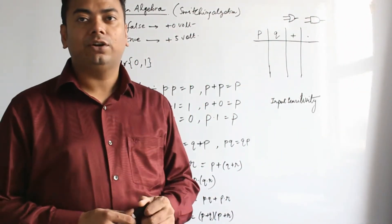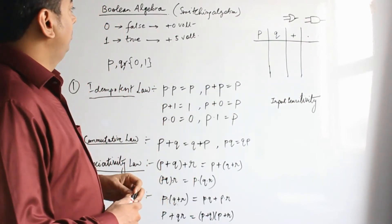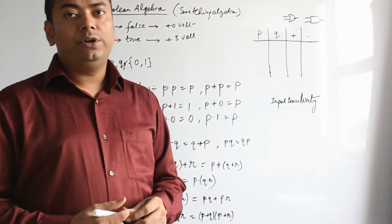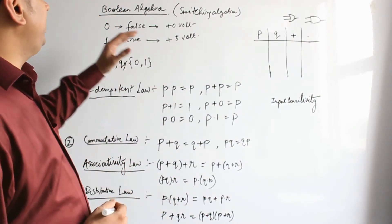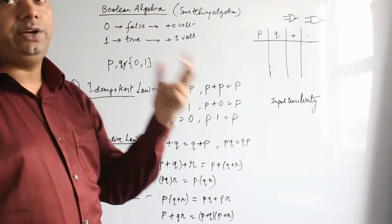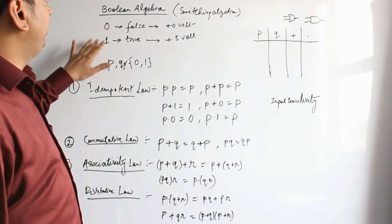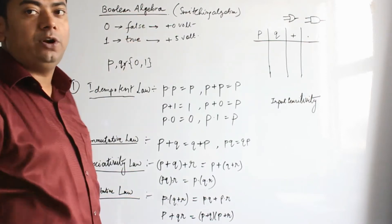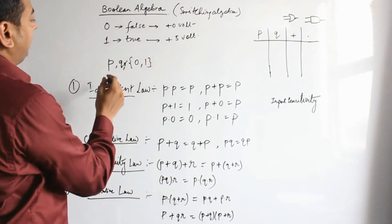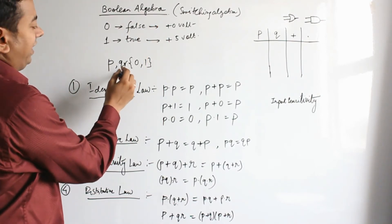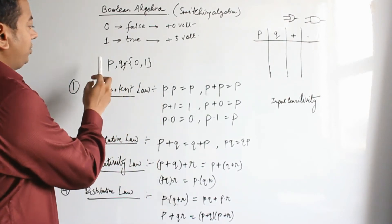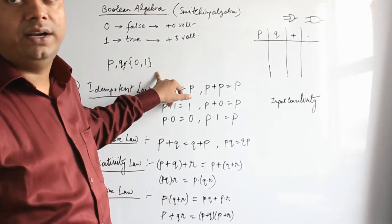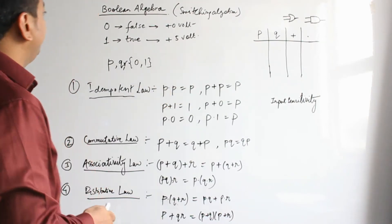Welcome to the first lecture of digital electronics. Let's start with Boolean algebra. Boolean algebra is basically switching algebra. In switching algebra we are switching for only two values — 0 or 1. For any variable in this algebra, let's suppose we have three variables P, Q, and R. The values which P, Q, and R can attain is only either 0 or 1 at a time.